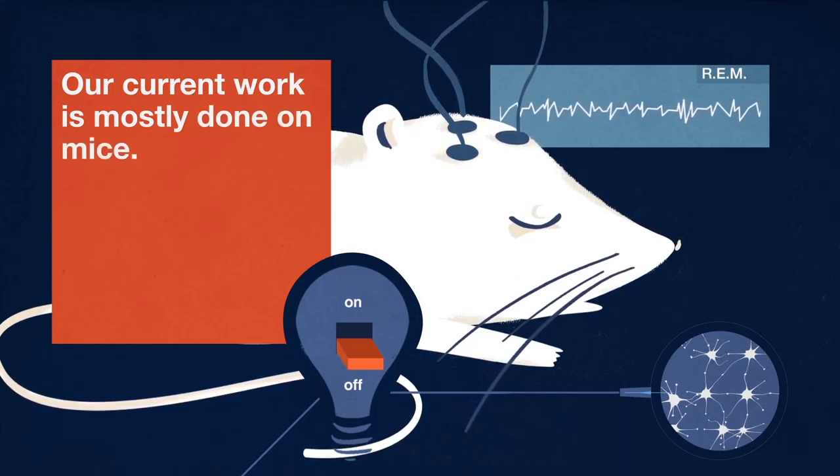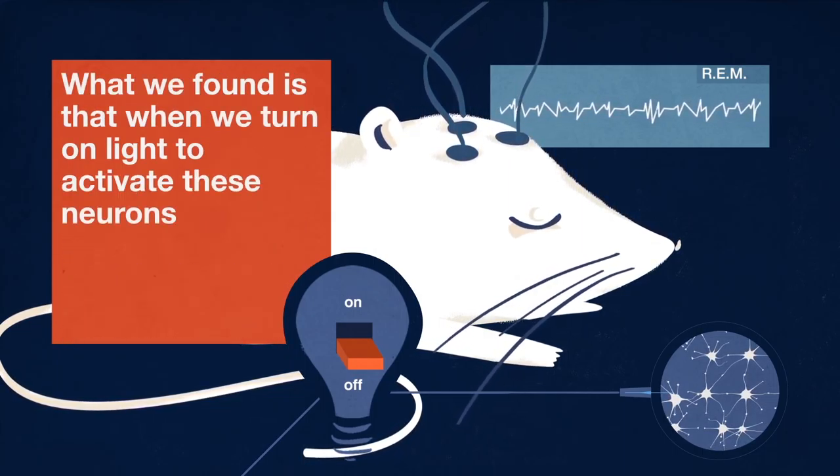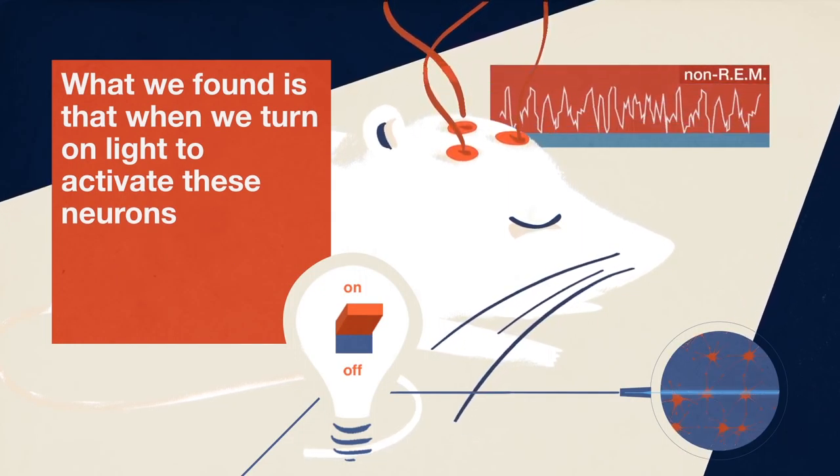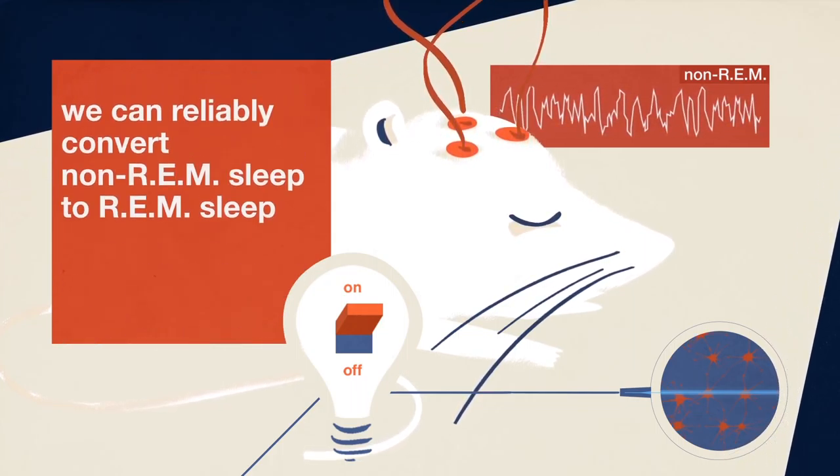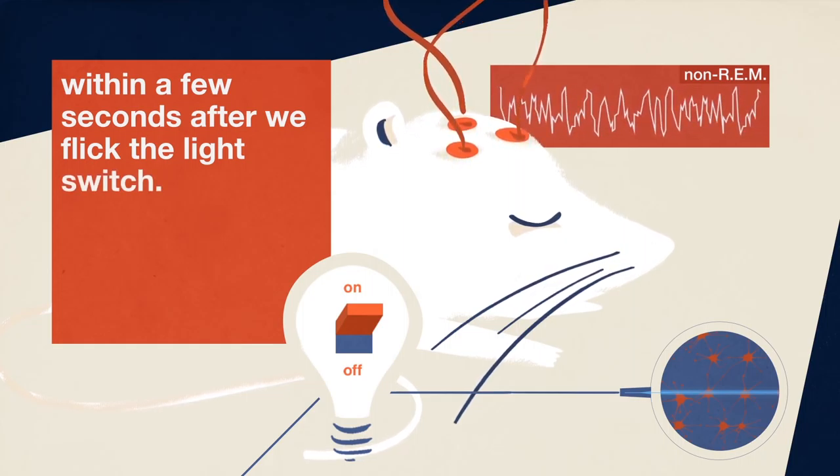Our current work is mostly done in the mouse. What we found is that when we turn on light to activate these neurons, we can reliably convert non-REM sleep to REM sleep within a few seconds after we flip the light switch.